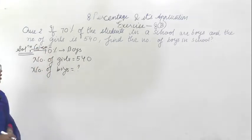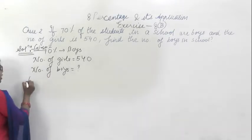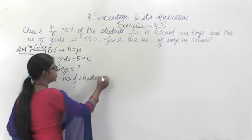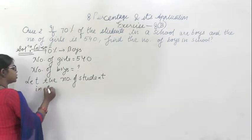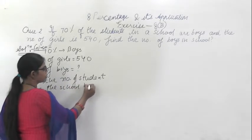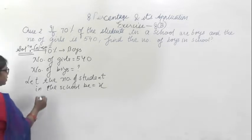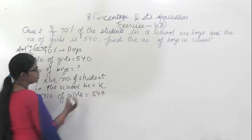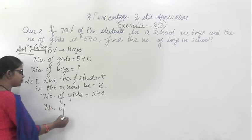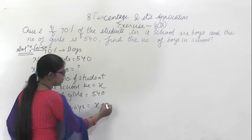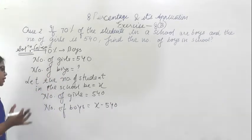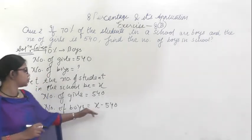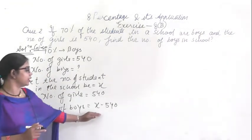Let the total number of students in the school be X. The number of girls is given as 540. The number of boys will be total minus number of girls, that is X minus 540. But we don't know X, so first we have to find out the total number of students, and then we can easily find out the number of boys.